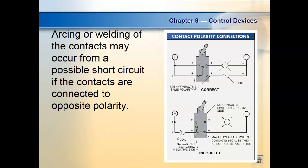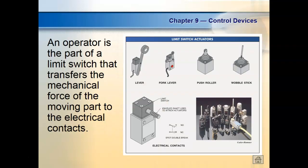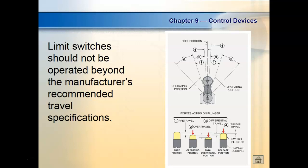These are just pictures of different operators for limit switches — waffled stick, push roller, fork-lever. Normally the push button is inside a protection ring. You can actually come in and put a different module on some of them to change the operator type. The one that we've got doesn't give you that option. You need to consider how far the limit switch can travel — if you make it travel further than it's supposed to, you could break the operator off.